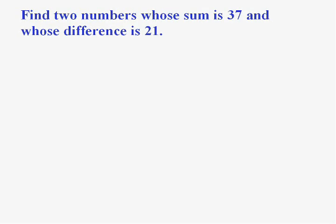Let's try a simple one first. In this problem they want me to find two numbers, so that reeks of system. It says find two numbers whose sum, that means they add up to 37, and whose difference, that means they subtract to 21.